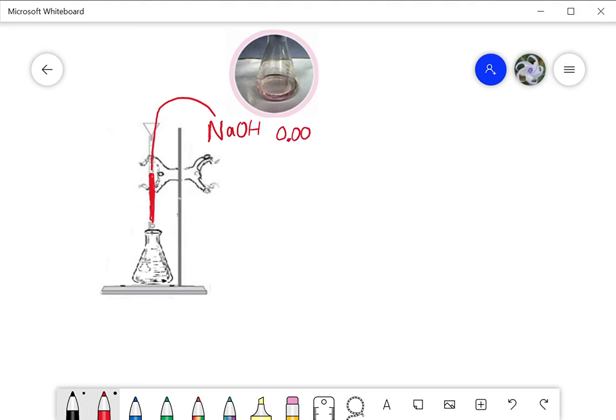Remember you have to start off reading, estimate the first decimal place or read the first decimal place and estimate the second. So you always have to have two decimal places when you're recording the volume that's in your burette.